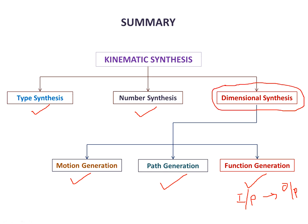In kinematic synthesis, I am interested only in dimensional synthesis. I assume type synthesis and number synthesis are already known — type of mechanism and number of links are given. I only need to find the dimensions through function generation, where output is dependent on input via a function. We will take up a four bar mechanism and a slider crank mechanism and, through the function generation approach, find out the different dimensions of the links involved using the Freudenstein equations. Thank you.